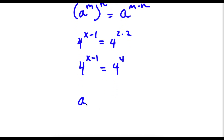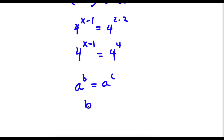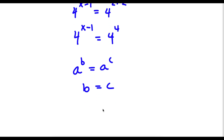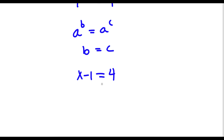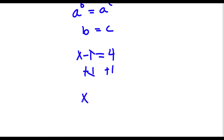Now, if I have something in the form a to the power of b is equal to a to the power of c, this means that b is equal to c. So in this case, x minus 1 is equal to 4. Now I have a simple equation — all I have to do is add 1 on both sides. These two cancel out, and I'm left with x is equal to 4 plus 1, which is 5.